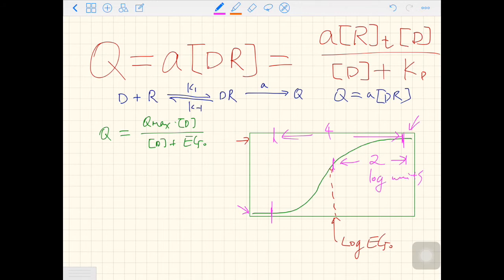Why? Let's work it out. Let's say here we have 1% of Q max, and we want to see what D is here.